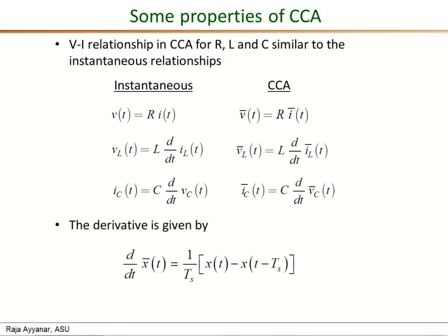And finally, the derivative of a cycle by cycle average quantity is given by this expression. So d/dt of x bar of t is the instantaneous x of t minus the x at a time t minus Ts, the difference divided by Ts is the derivative of x bar of t.